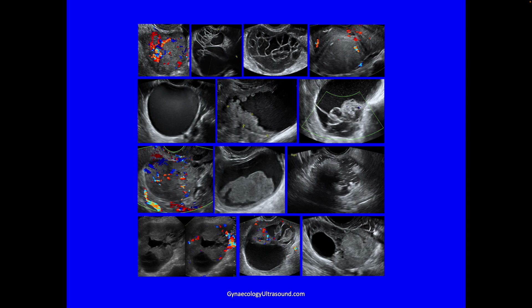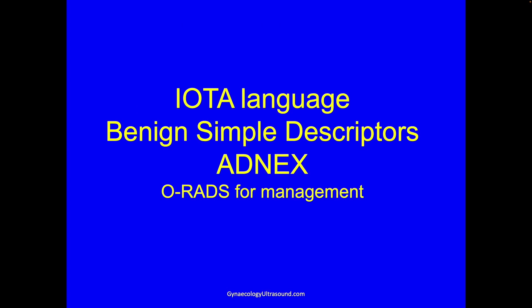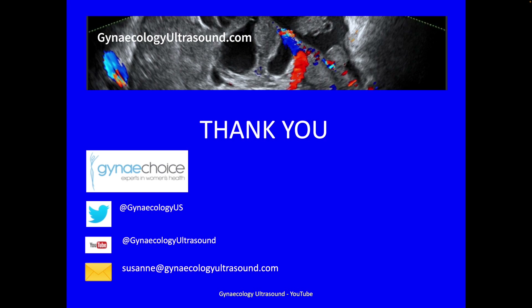In summary, we have stopped using the word complex cyst altogether because it doesn't mean anything. Using IOTA language and risk models, we can predict the histology of many lesions and determine whether they are likely to be benign or malignant. Use the IOTA language, benign simple descriptors, then ADNEX, and use ORADS for management. Thank you.